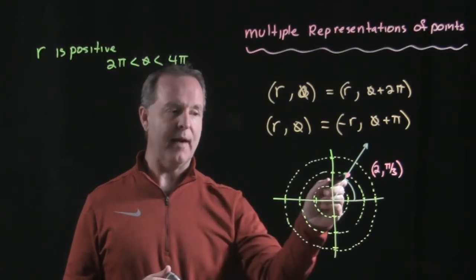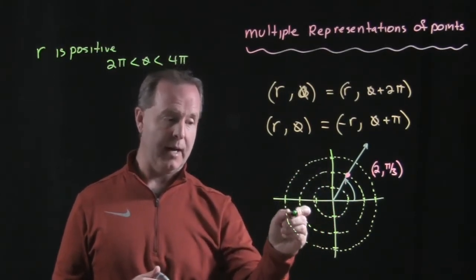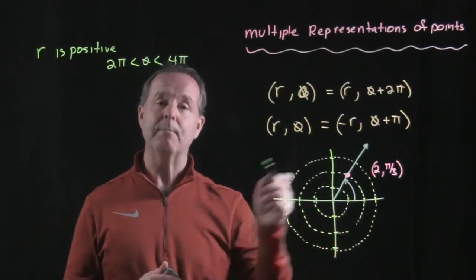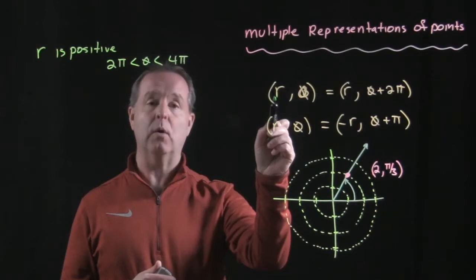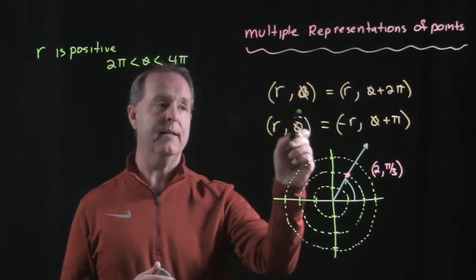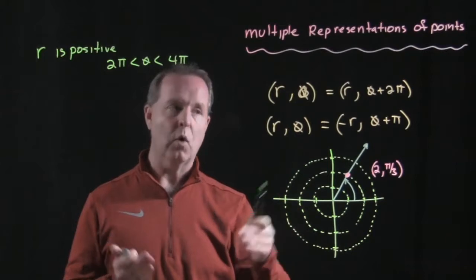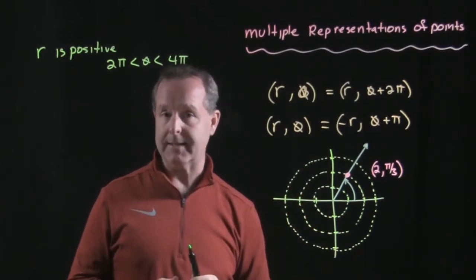You know that if I swept this angle out another 2π, I would land right back at that same position. So I can also look at a polar coordinate position as (r, θ), as (r, θ + 2π), or any multiple of 2π past that.